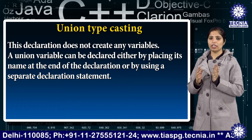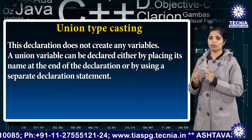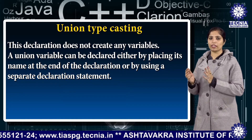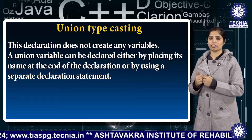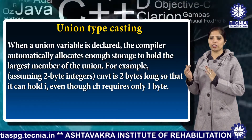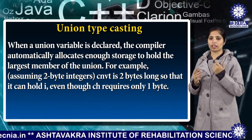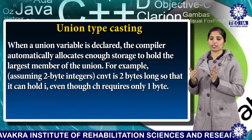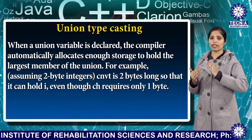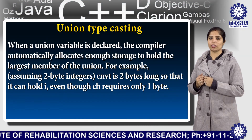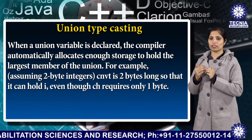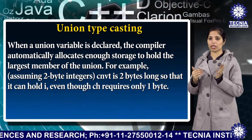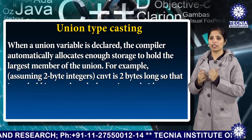A union variable can be declared either by placing its name at the end of the union declaration or by using a separate declaration statement. When a union variable is declared, the compiler automatically allocates enough storage space to hold the largest member of the union. For example, 'convert' is two bytes long so that it can hold i, even though ch requires only one byte.